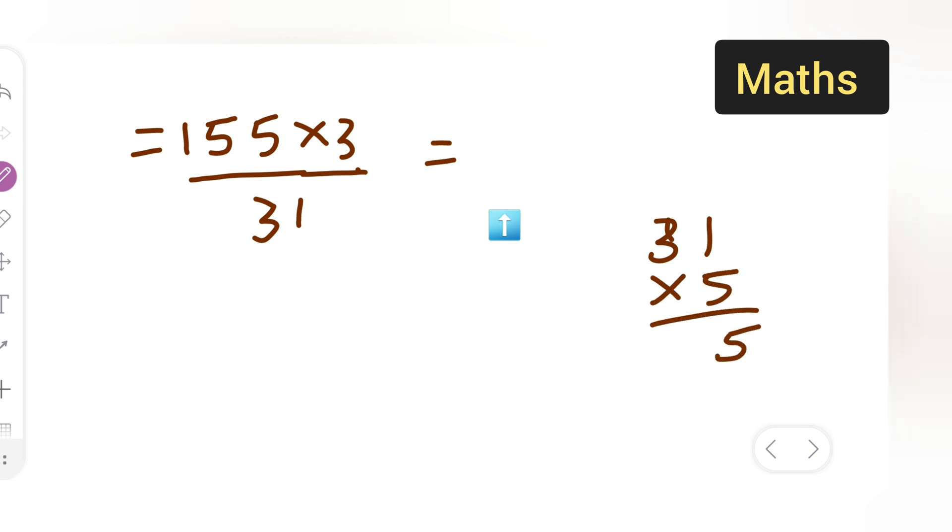5 times 1 is 5, 5 times 3 is 15. You can directly cancel. 31 times 1 is 31, 5 times 31 is 155. What is left? 5 times 3 is left, which equals 15 - that's your answer.